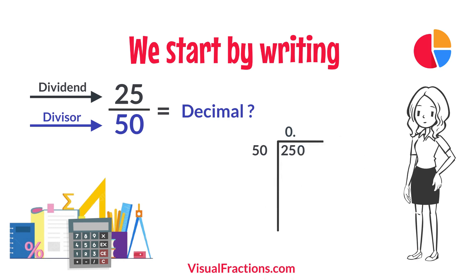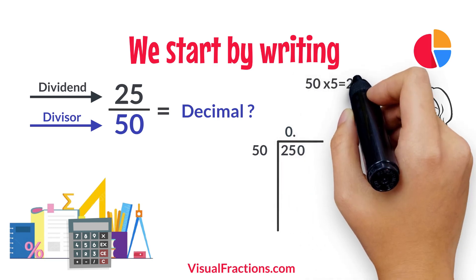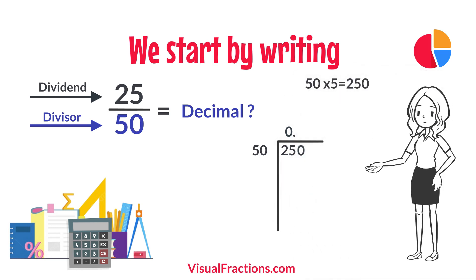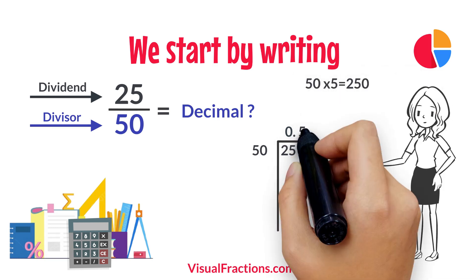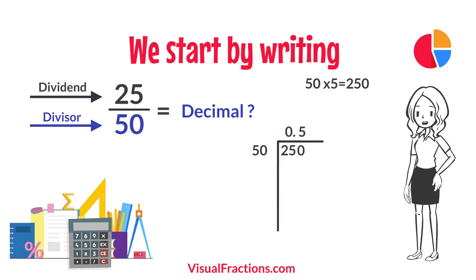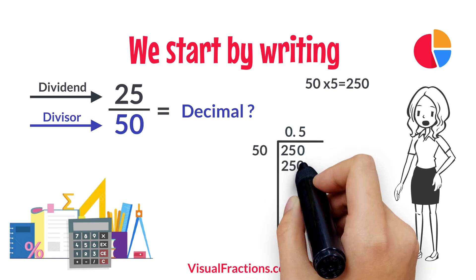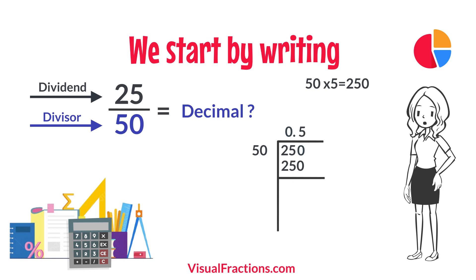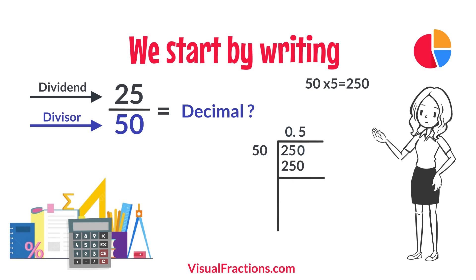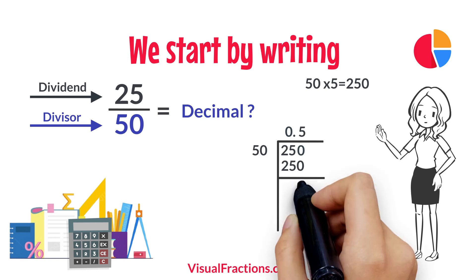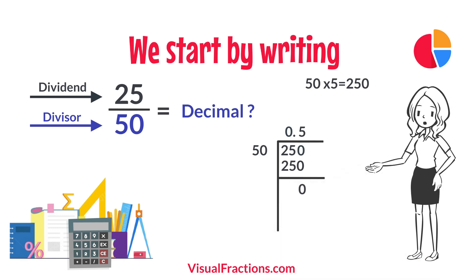How many times does 50 go into 250? Exactly 5 times. We write 5 after the decimal point in the quotient. Multiplying 5 by 50 gives us 250. When we subtract 250 from 250, we get a remainder of 0.